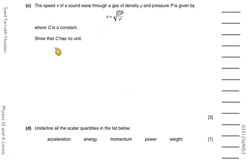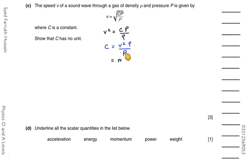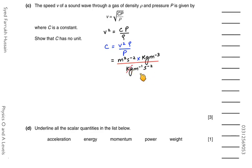In the next question, we must show that c has no unit in the equation v = √(cP/ρ). Making c the subject: v² = cP/ρ, so c = v²ρ/P. Substituting units: v² is m²·s⁻², density is kg·m⁻³, and pressure is kg·m⁻¹·s⁻². After cancellation, m²·m⁻³·m = m² cancels with kg and s terms completely, leaving no units — confirming c is dimensionless.